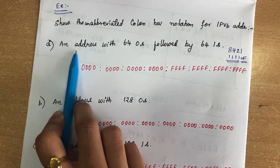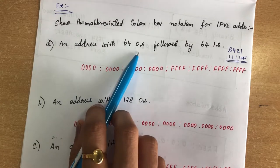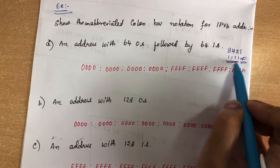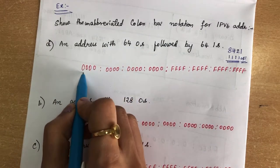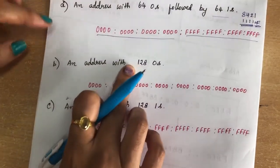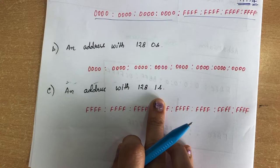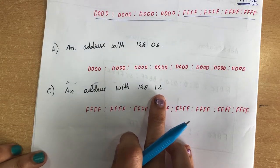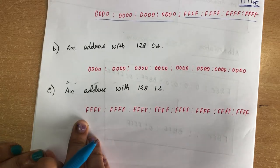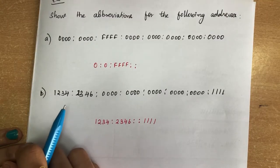Here are some examples of converting binary to IPv6 notation. For an address with 64 zeros followed by 64 ones, using the 8-4-2-1 format, all ones equals F in hexadecimal, so the 64 zeros are represented as groups of zeros and the 64 ones as groups of F. For an address of all 128 zeros, all digits will be zero. For 128 ones, all hexadecimal digits will be F.